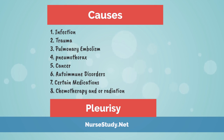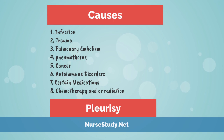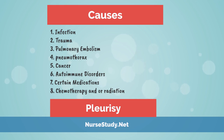2. Trauma — mechanical injury can result in pleurisy. The pleura can have swelling and inflammation when there is bruising or fracture of the ribs. 3. Pulmonary embolism — a blood clot that blocks the lungs can cause reduced blood flow and oxygen levels in some parts of the lungs and eventually cause tissue death, which can also result in pleurisy.